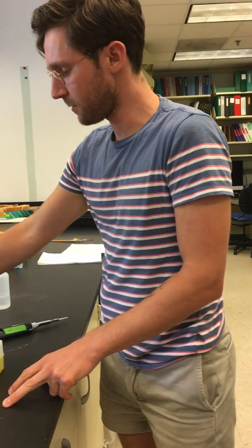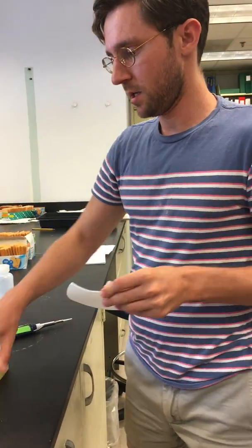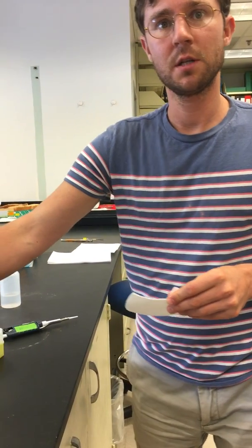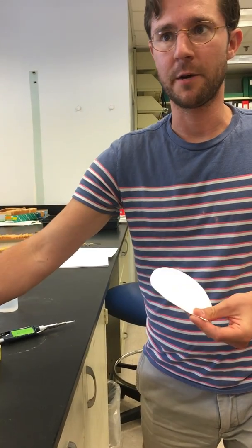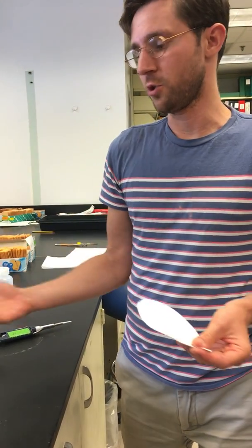So the first thing is to germinate pollen in a drop of this solution. It needs to be in a moist environment so the solution doesn't dry out. If this dries out, you'll get no germination.